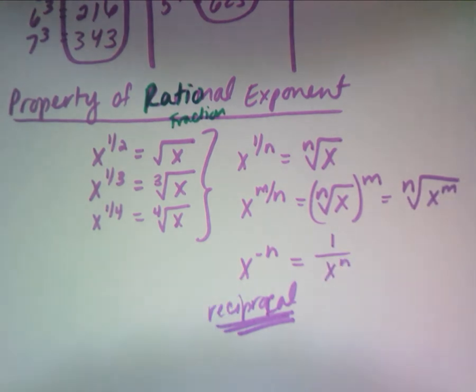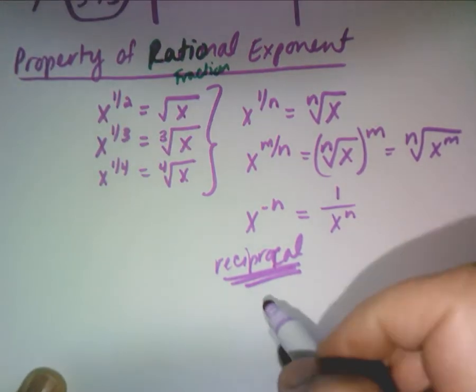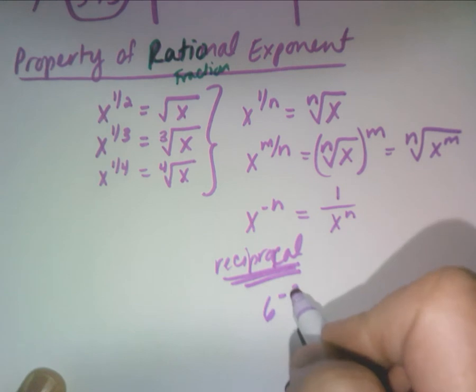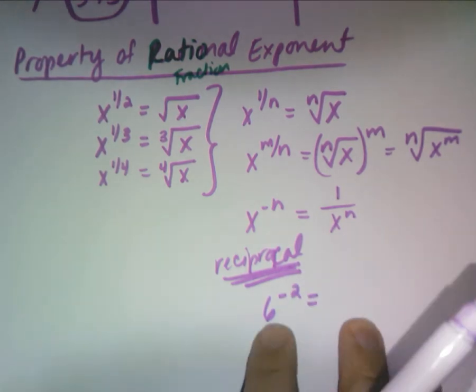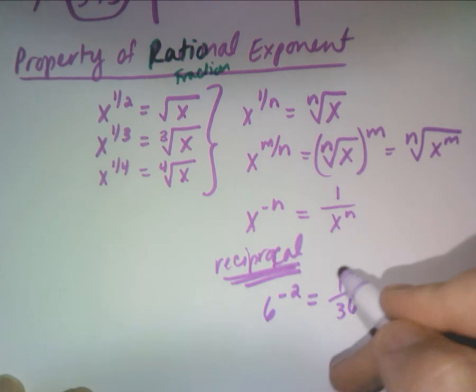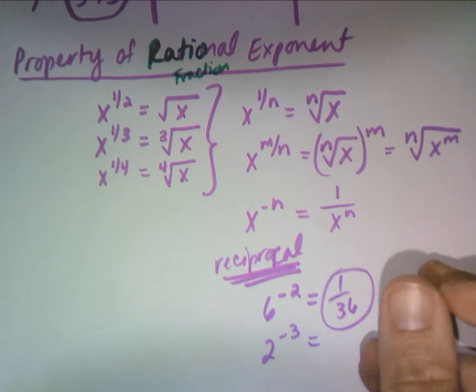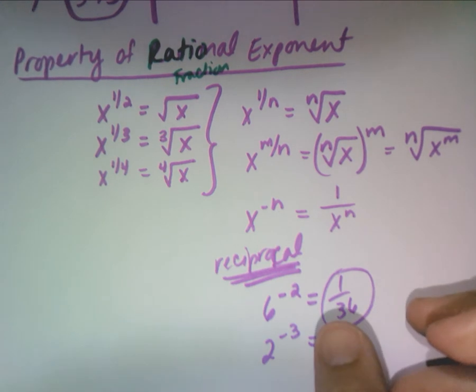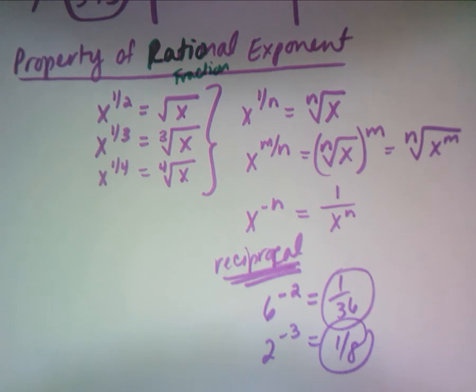Why is this going to be helpful? Because if I do something like six to the negative two, this is what I do in my head. I actually ignore the negative. What's six squared? And then, because it has a negative exponent, I flip that. One over 36. Two to the negative three. I ignore it. I just say in my head, what's two to the three? Eight. What's the flip of eight? One eighth. And that's what we'll be doing today.